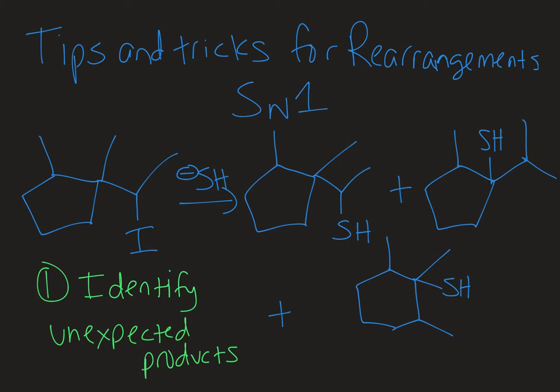I have here a reaction scheme with a starting material that has a leaving group on a secondary type carbon — the iodine leaving group — and then we have our product distribution on the right hand side. The first thing to do when looking at a problem is identify any unexpected products, meaning products that look like they resulted from a rearrangement. So is the skeletal structure of the product different than that of the starting material?